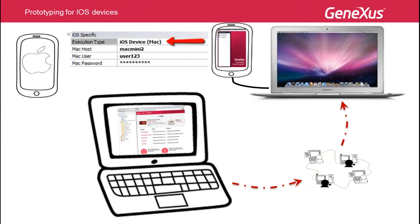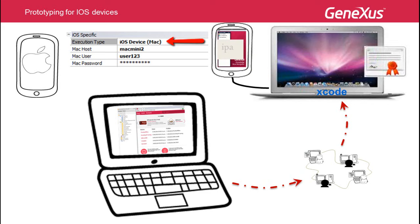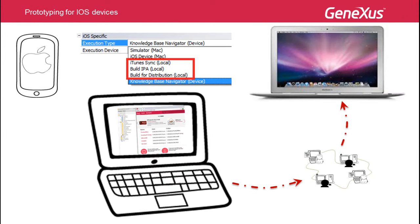When a device is connected to the Mac, the 'iOS Device Mac' option sends the Xcode project to the Mac, compiles it, and generates and installs the IPA package on the device. In this case, the signature must be installed on the Mac and the device must be duly authorized. The options 'Local', 'iTunes Sync', 'Build IPA', and 'Build for Distribution' also send the Xcode project to the Mac, compile it, and generate the IPA package to copy it to the development computer.